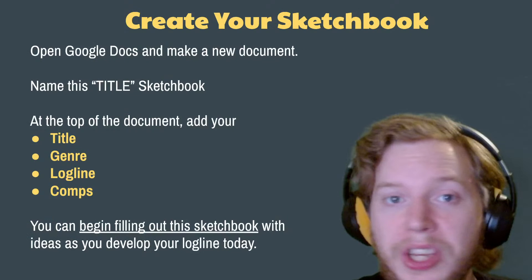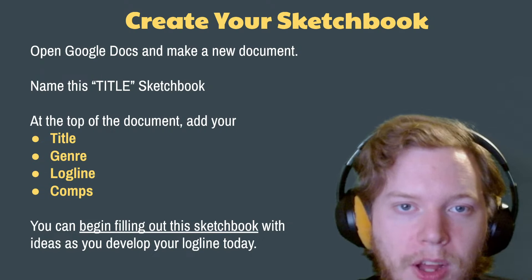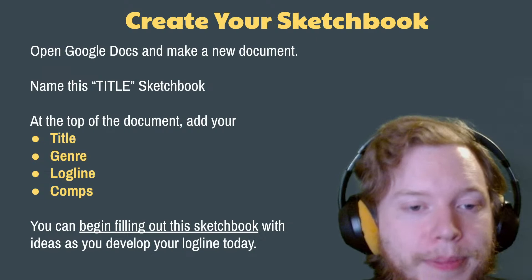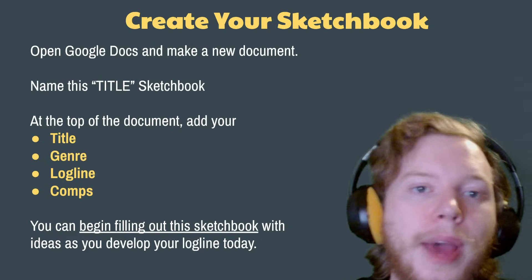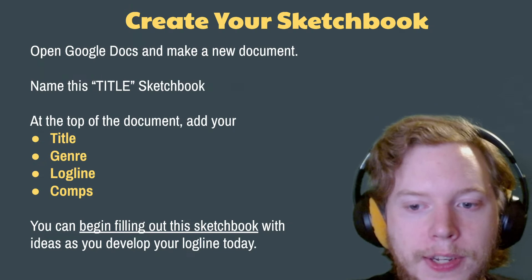Let's make your sketchbook. If you haven't already, go to Google Docs and make a blank new document called 'Name of Movie Sketchbook.' Or if you don't have a title, call it something like 'Rabbit Movie Sketchbook.' At the top, you're going to include a couple fields to fill out as you have the answers: title, genre, logline, and comps. Title is self-explanatory, and it's totally fine to have a temporary placeholder title for now.